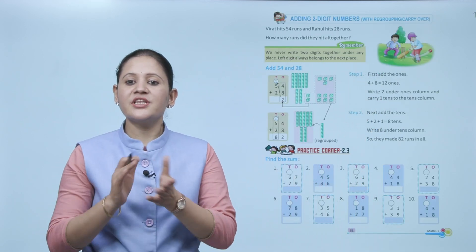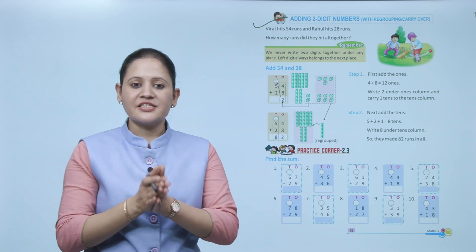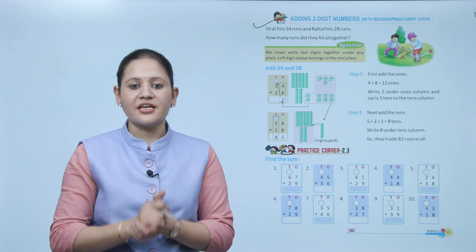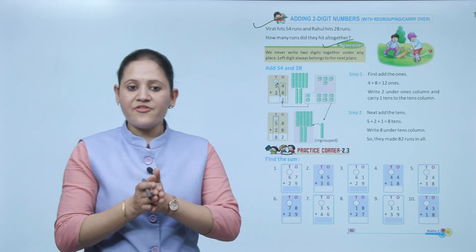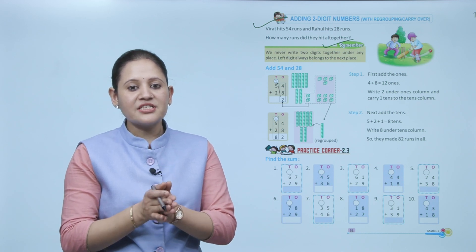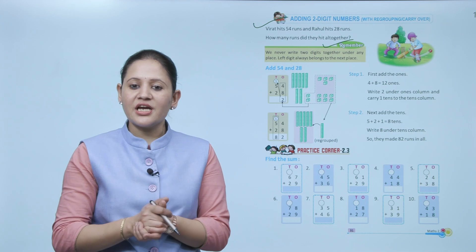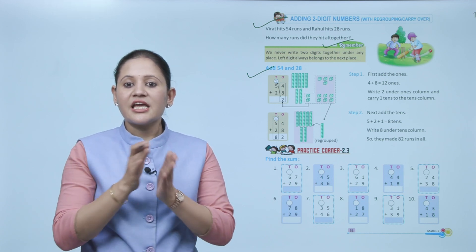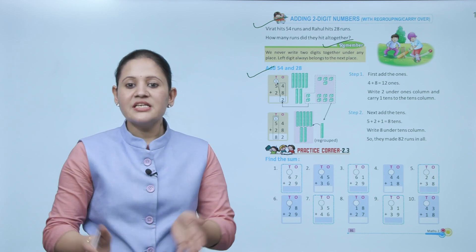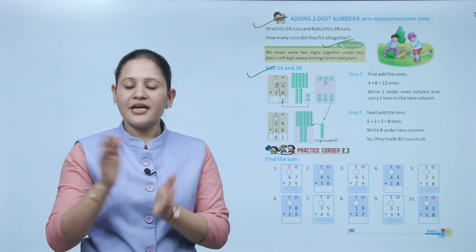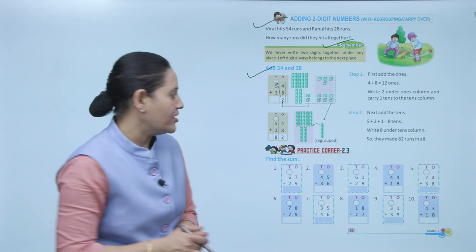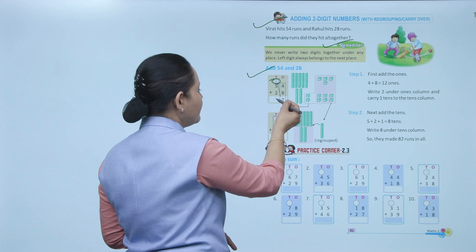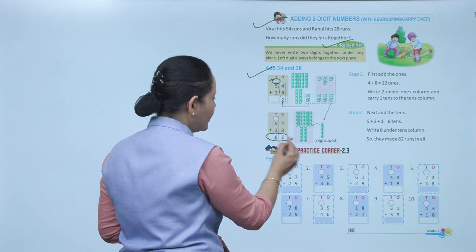Adding two-digit numbers with regrouping or carryover: Virat hits 54 runs and Rahul hits 28 runs. How many runs did they hit altogether? We never write two digits under one place — the left digit always belongs to the next place. Add ones: 4 plus 8 is 12 ones — write 2 under ones, carry 1 ten. Add tens: 5 plus 2 plus 1 is 8 tens. Total: 82 runs.